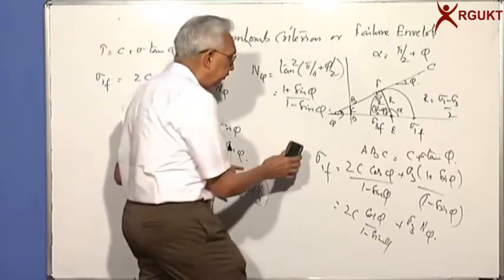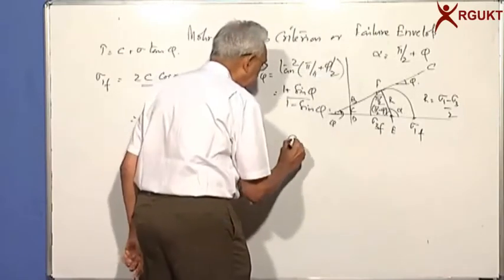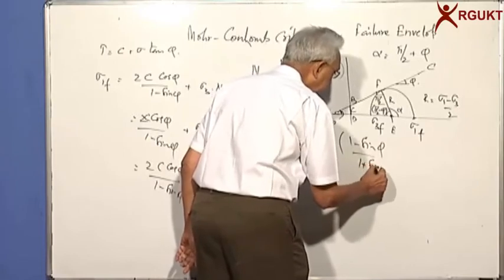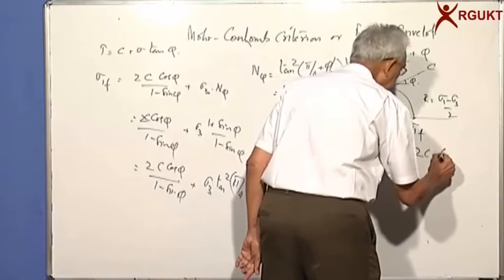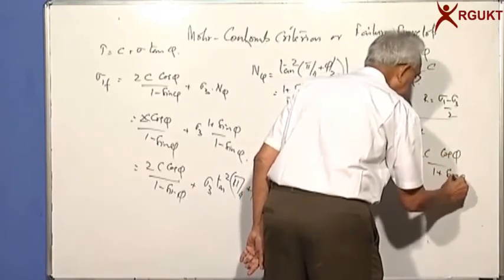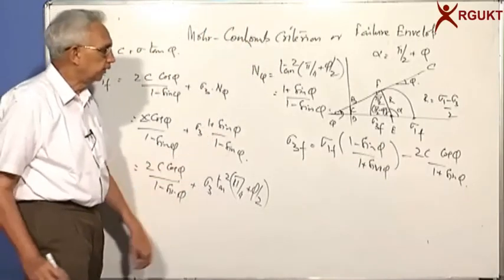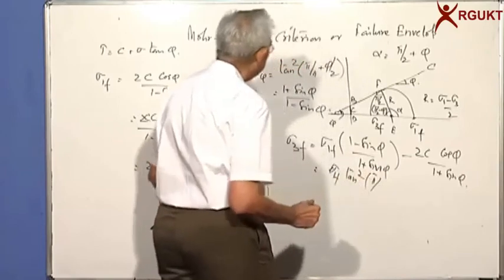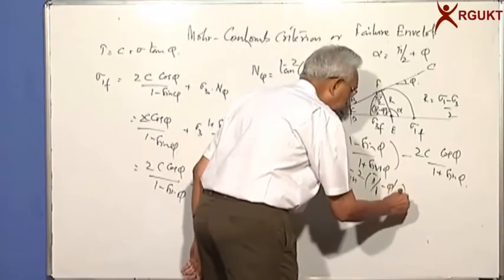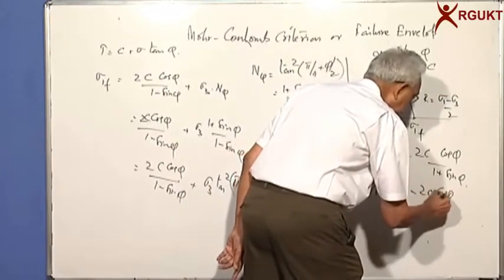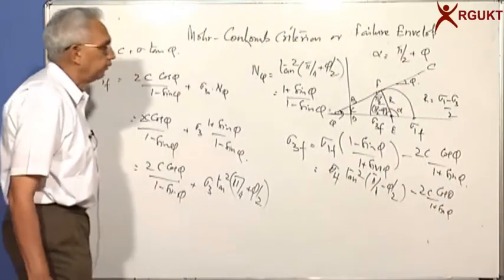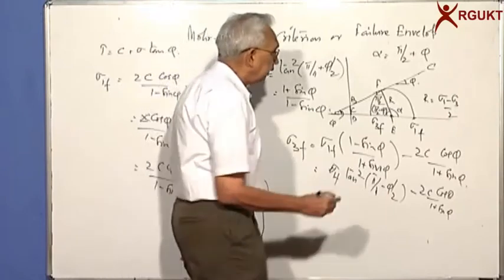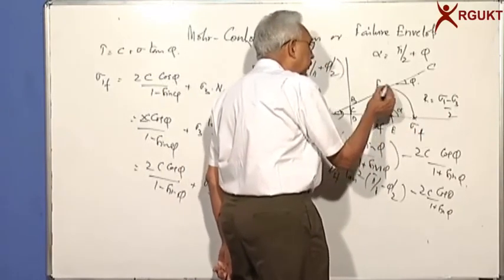Instead of expressing in terms of sigma 1, if you express in terms of sigma 3, you get sigma 3f equals sigma 1f times (1 minus sin(phi))/(1 plus sin(phi)) minus 2C cos(phi)/(1 plus sin(phi)). Here, instead of tan²(pi/4 plus phi/2), you get tan²(pi/4 minus phi/2), and instead of plus you get minus 2C cos(phi)/(1 plus sin(phi)). So you get the expressions for the failure envelope in terms of tau, sigma 1f, and sigma 3f.